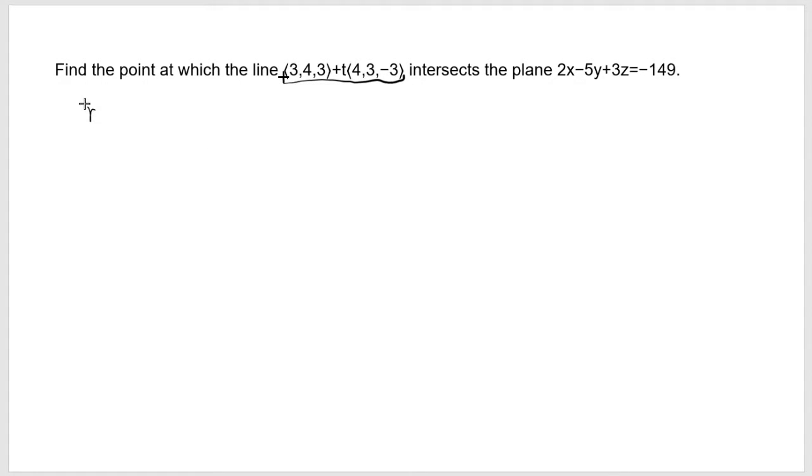This vector-valued function is given by (3, 4, 3) plus, where t can be multiplied inside. This is called scalar multiplication, so it's 4t, 3t, negative 3t. Then vectors add component-wise, so it's (3 + 4t, 4 + 3t, 3 - 3t).